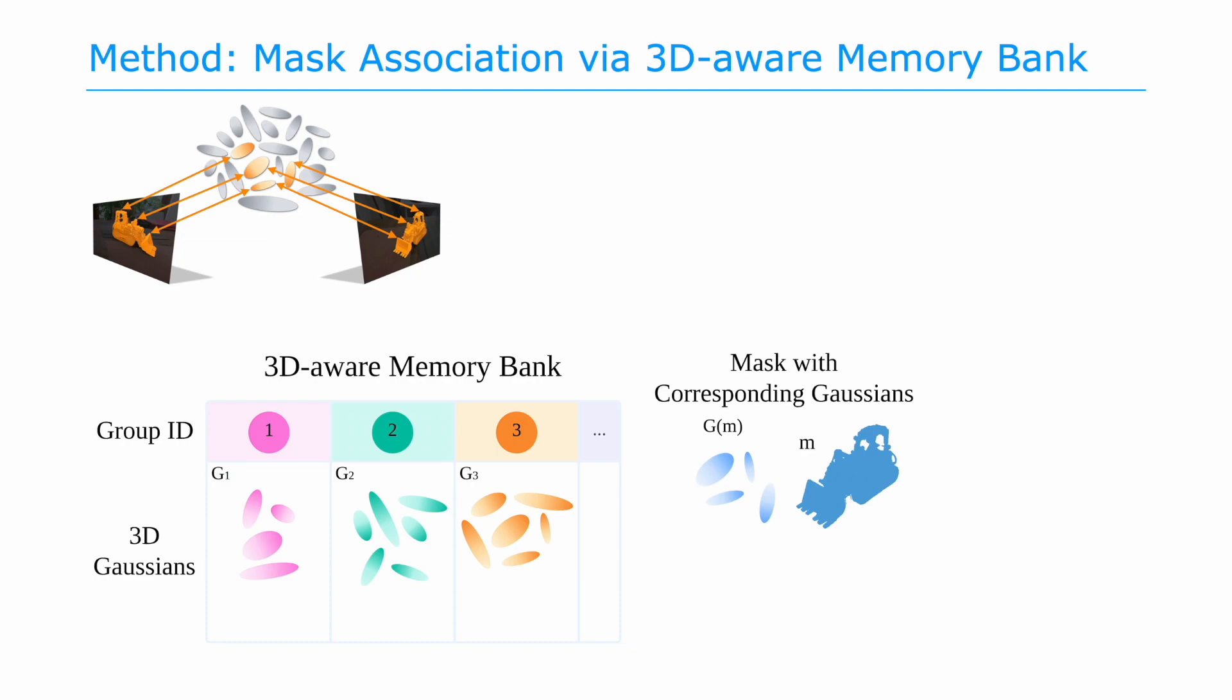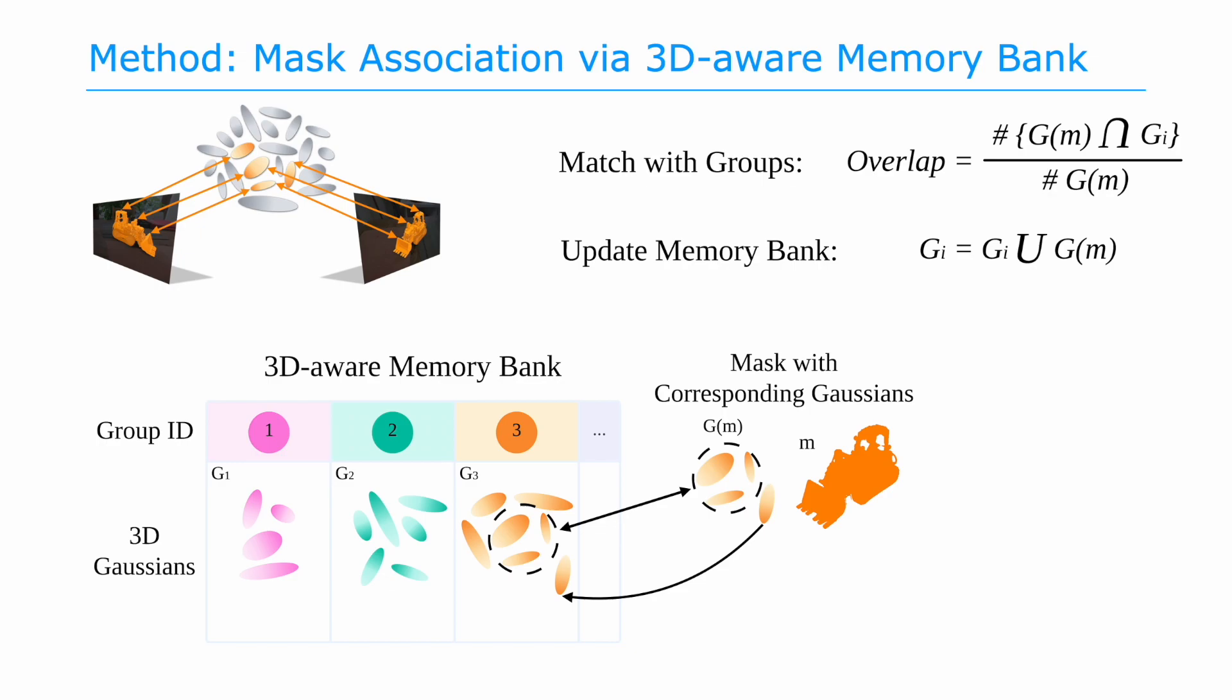Sequentially, we aim to find if the current mask has a significant amount of overlapped Gaussians with any groups in the memory bank. If a group has the highest overlap with the current mask and the overlap is above a threshold, we assign the group ID to the current mask and update the memory bank with the non-overlapped Gaussians. Otherwise, we declare a new group.